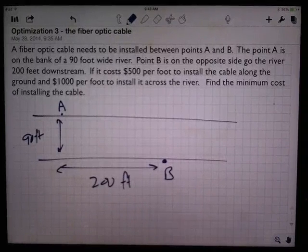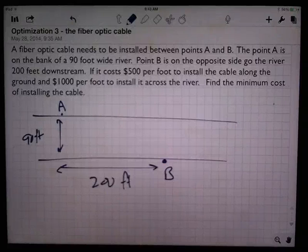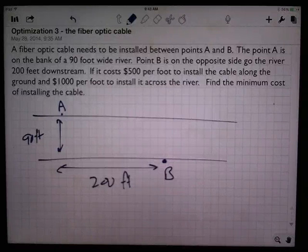If it costs $500 per foot to install the cable along the ground, and $1,000 per foot to install it across the river, find the minimum cost of installing the cable.